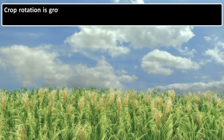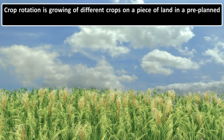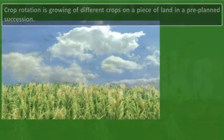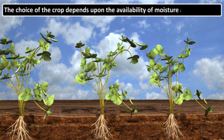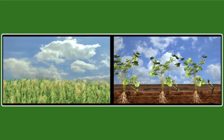Crop rotation is the growing of different crops on a piece of land in a pre-planned succession. Depending upon the duration, crop rotation is done for different combinations. The choice of crop depends upon the availability of moisture and irrigation. If crop rotation is done properly, three or four crops can be grown in a year with good yield.